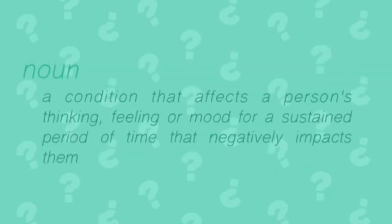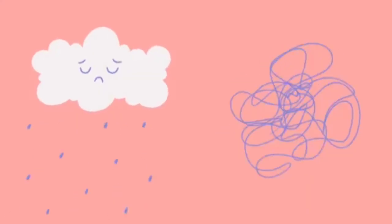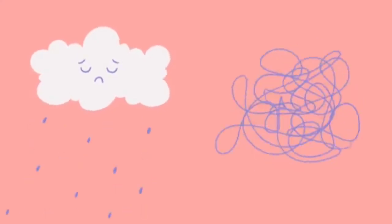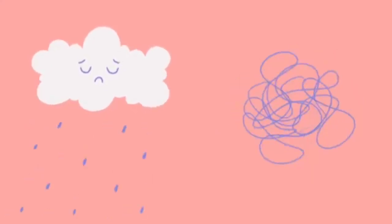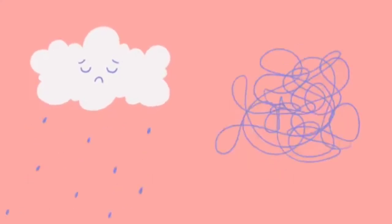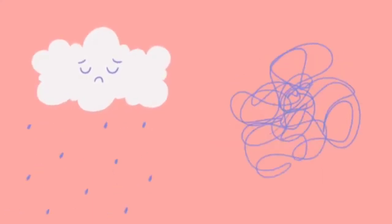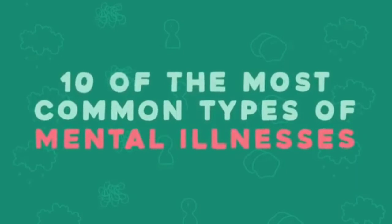What is mental illness? According to the National Alliance on Mental Illness, it's defined as a condition that affects a person's thinking, feeling, or mood for a sustained period of time that negatively impacts them. You might be wondering: is depression a mental illness? What about anxiety? Yes, they are. In fact, they're the most common types of mental illnesses. In this video, Psych2Go covers 10 of the most common types of mental illnesses.